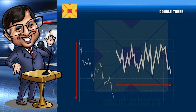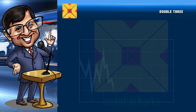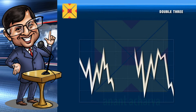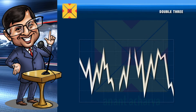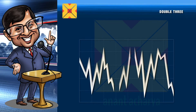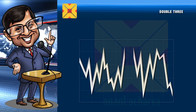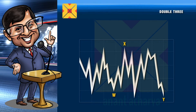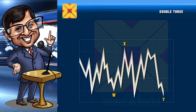Double threes appear especially when markets are in a waiting mode and biding time for some news announcement or result. The flat, while adding one more flat to itself, once again needs an intervening three-wave pattern. Thus the pattern is: flat, intervening three, flat. This is labeled WXY.